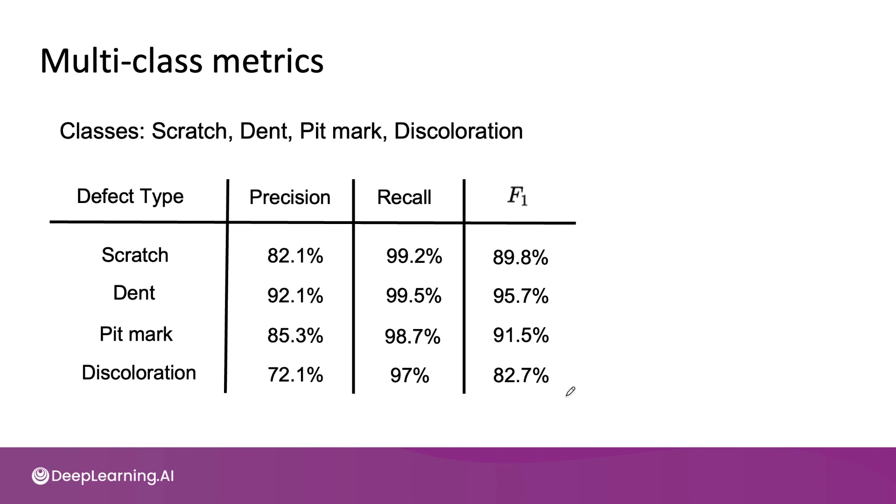And the reason we use F1 is because maybe all four defects are very rare. And so accuracy would be very high, even if the algorithm was missing a lot of these defects. So I hope that these tools will help you both evaluate your algorithm, as well as prioritize what to work on, both in problems with skewed datasets, and for problems with multiple rare classes.